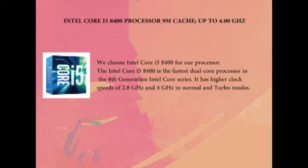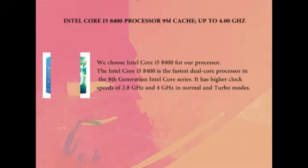We choose the Intel Core i5-8400 for our processor. The Intel Core i5-8400 is among the fastest processors in the 8th generation Intel Core series. It has a clock speed of 2.8GHz and up to 4GHz in turbo mode.